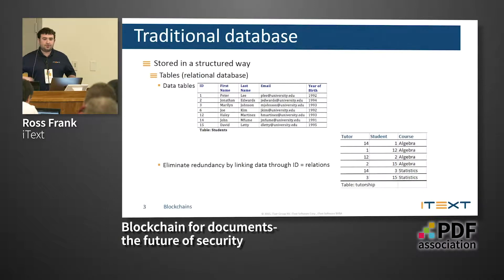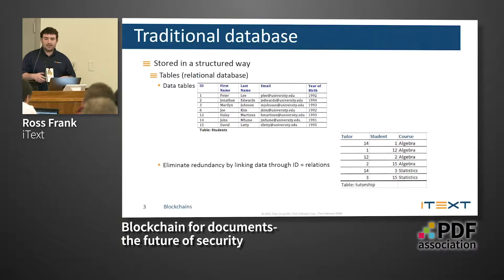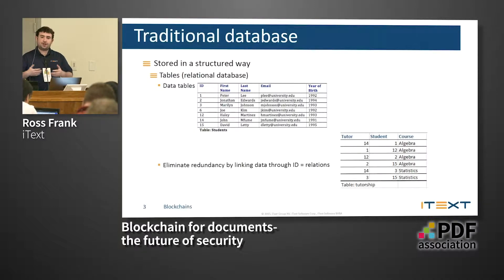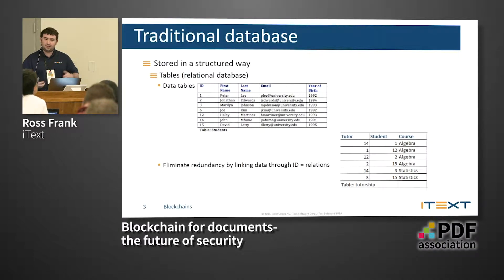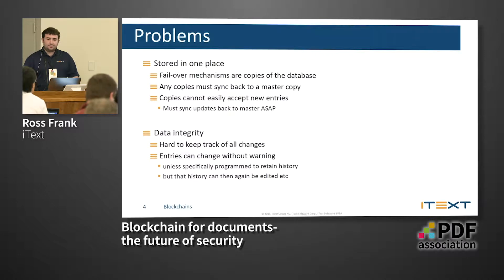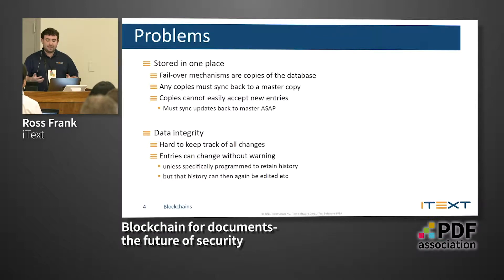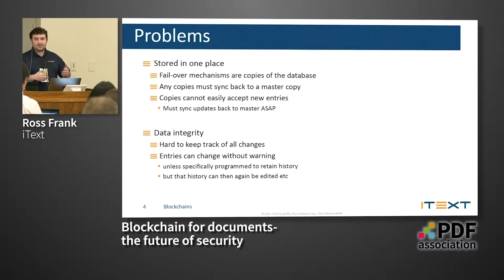With traditional databases, you have data stored in a structured way — tables, relational databases — stored in one location. You can create copies but they're still just copies of the same data with a master and sub ones. You can eliminate redundancy by linking data through IDs and relations, but data still gets spread out. Data is stored in one place; you can have failover mechanisms but they're all just copies that must sync back.